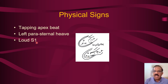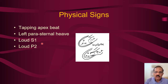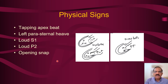A loud first sound with the murmur is very typical of mitral stenosis. There may also be a loud pulmonary component of the second sound because of pulmonary arterial hypertension. Then there is the opening snap — normally the opening of the mitral valve does not produce any sound because the opening pressure of the left atrium is only about 2 mmHg, but in patients with mitral stenosis the higher left atrial pressure opens the cusps forcefully, creating an opening snap.